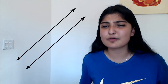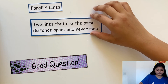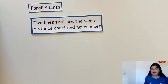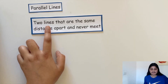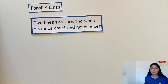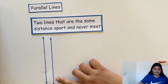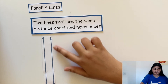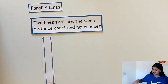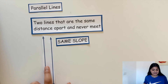But what about parallel lines? What are parallel lines? Parallel lines are two lines that are the same distance apart and never meet. Let's draw a pair of parallel lines. These are parallel since they continue in the same direction, up and down. And since parallel lines have the same slope, they are the same distance apart and will never meet or cross each other.